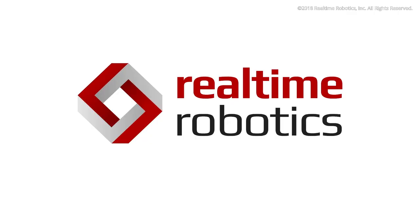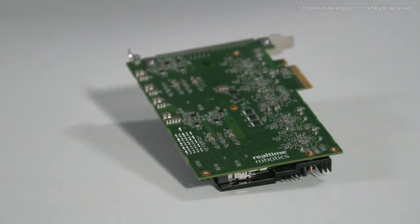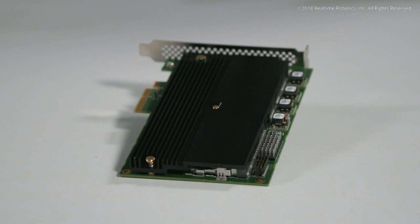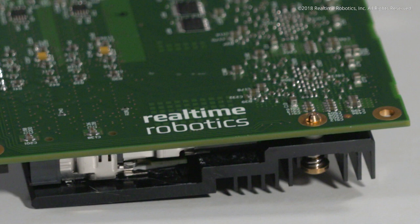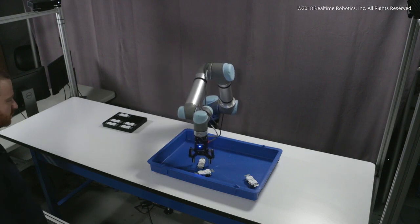Real-time Robotics has invented a specialized processor which dramatically outperforms conventional planning solutions. The speed of our processor enables businesses to maximize throughput in existing workflows and more importantly, adapt to both process variation and dynamic work environments.